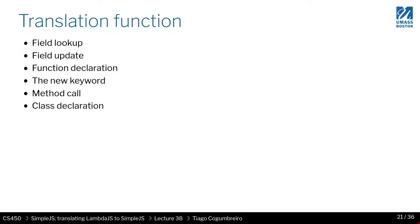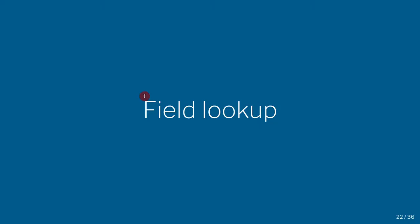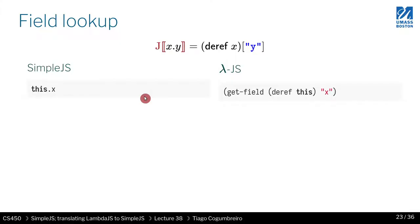For the translation function, there are the following cases we have to handle: field lookup, field update, function declaration, the new keyword, method call, and class declaration. These are all the things we want to support, and we're going to implement a translation for each of these cases. So let's start with field lookup.